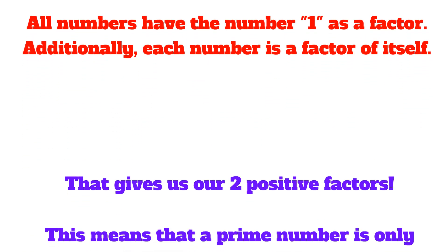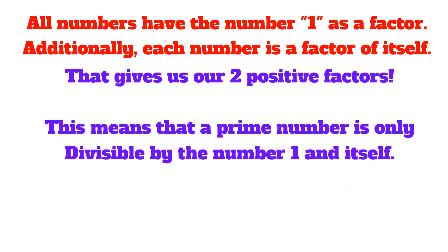All numbers have the number 1 as a factor. Additionally, each number is a factor of itself. That gives us our two positive factors. This means that a prime number is only divisible by the number 1 and itself.